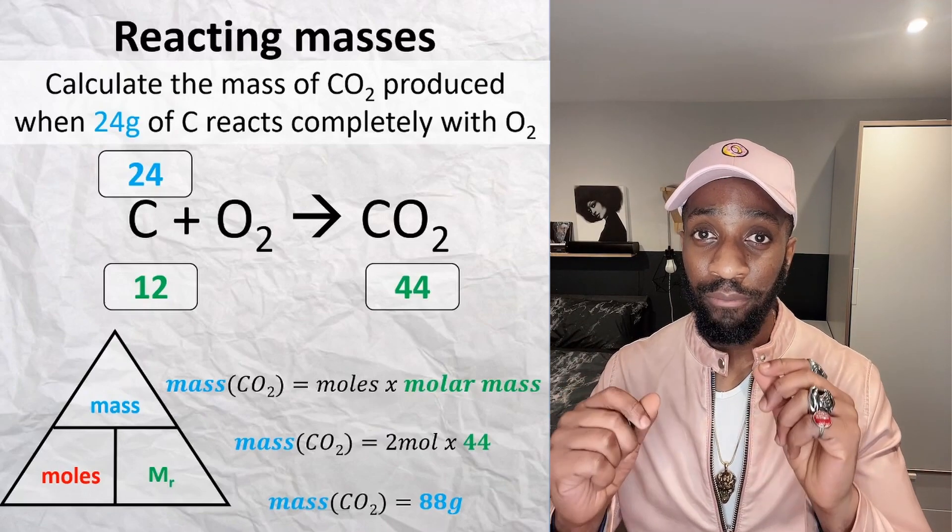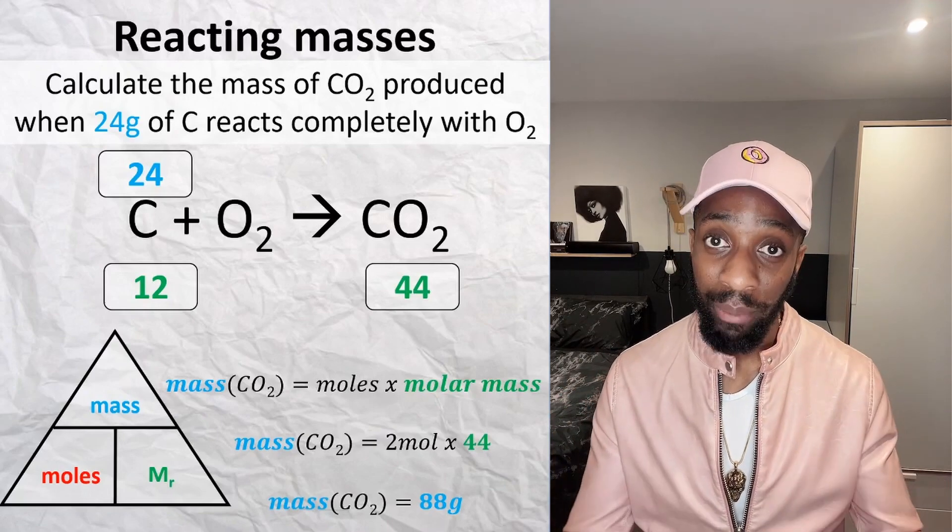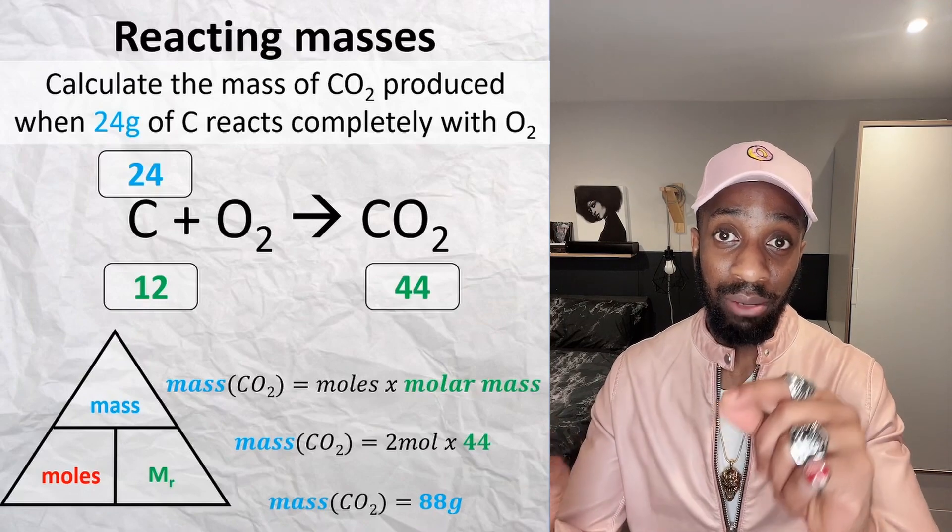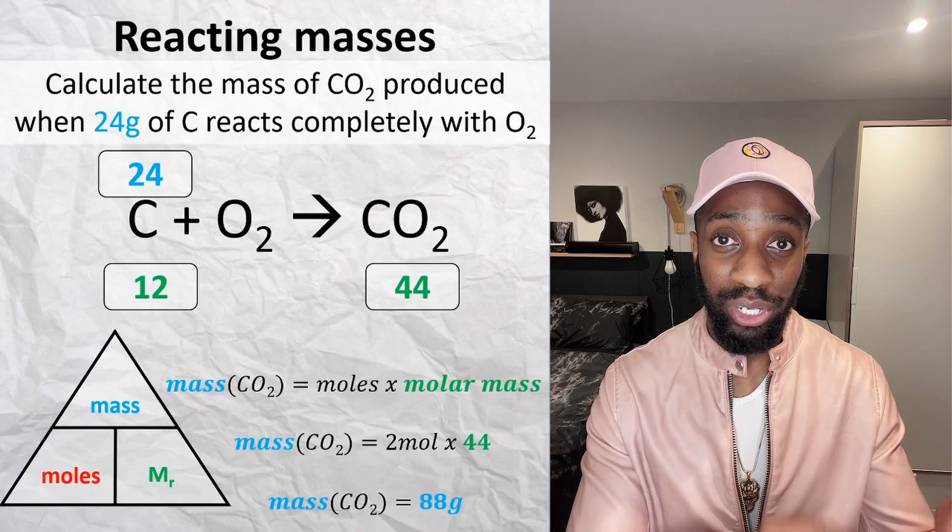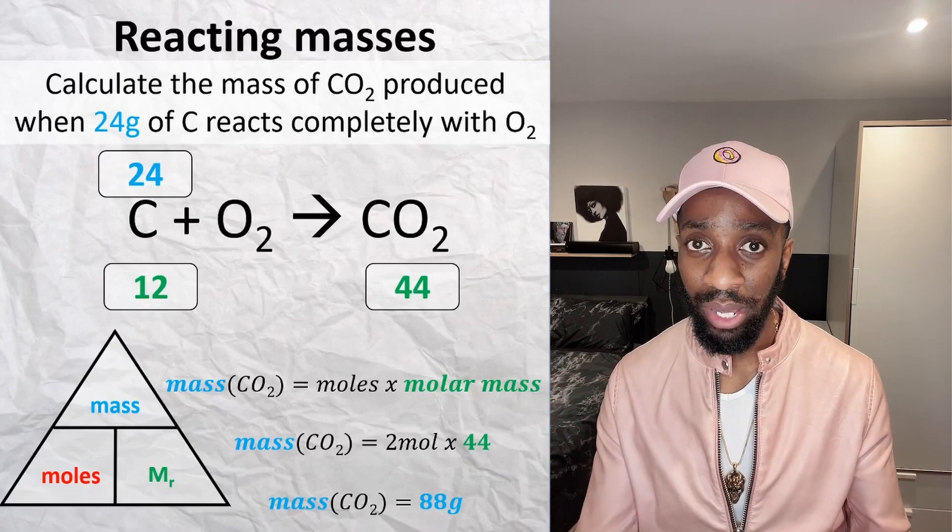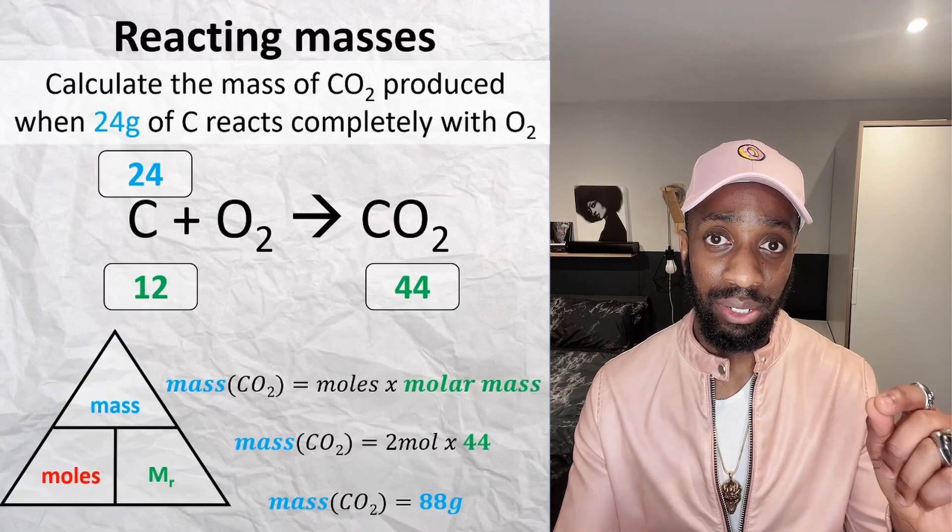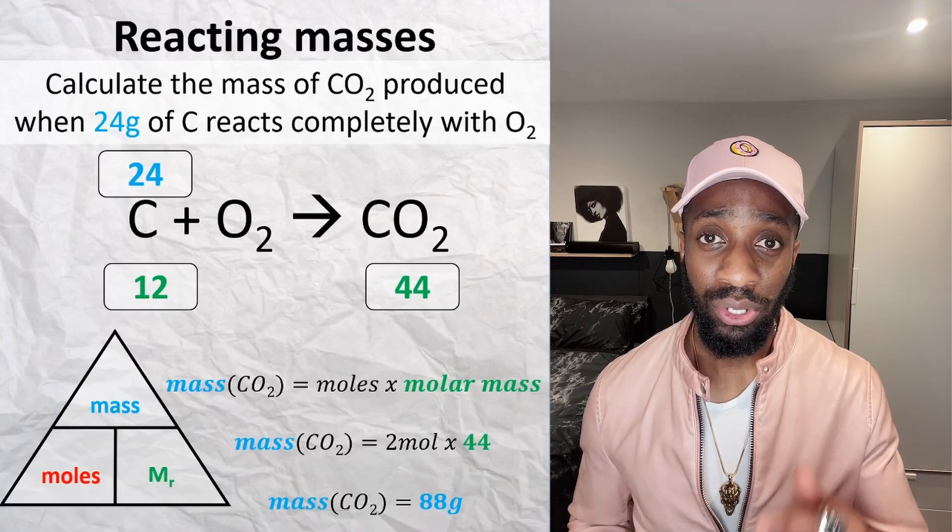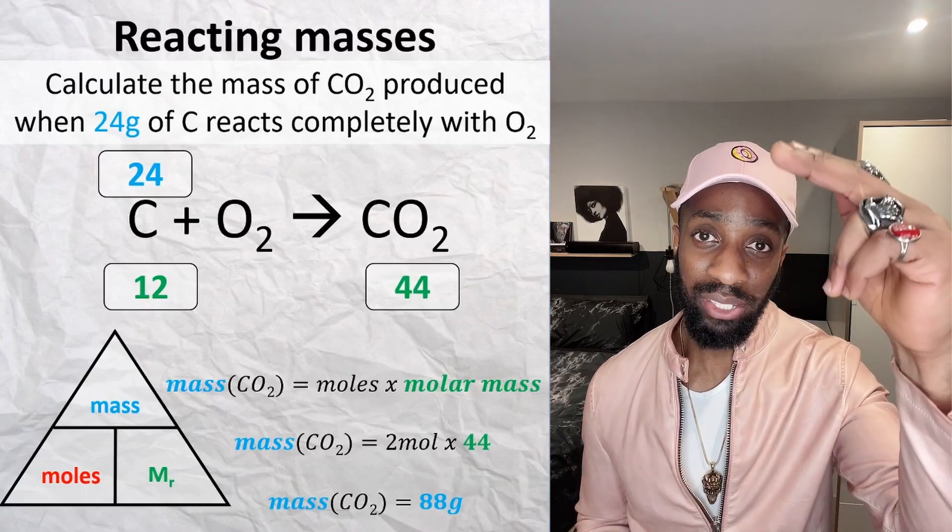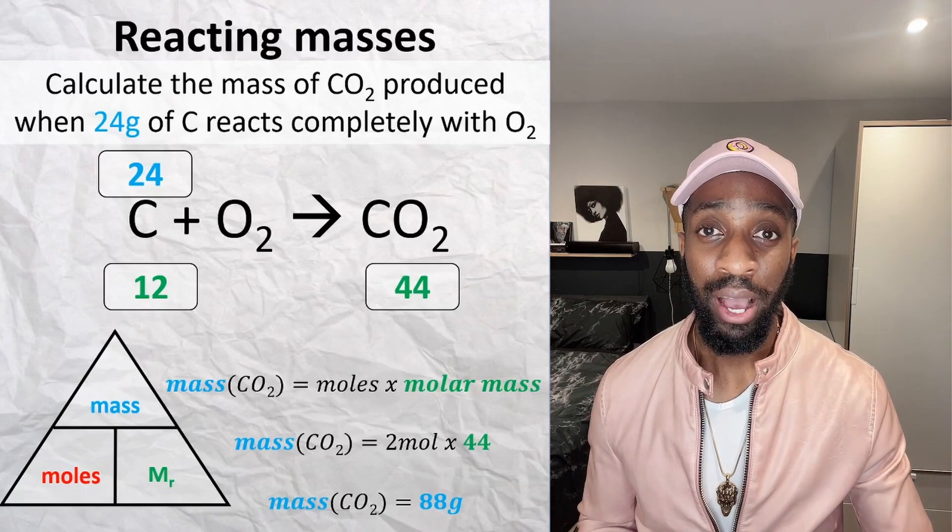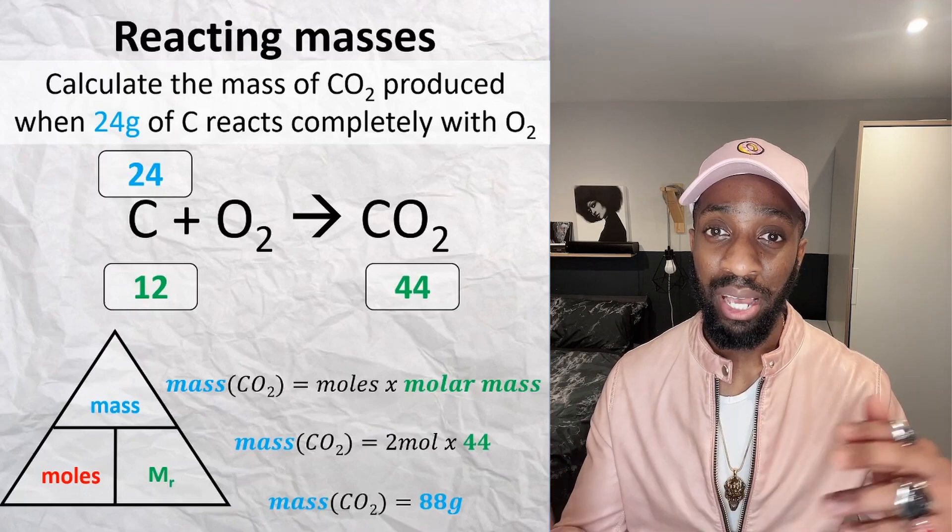And write the relative formula masses, relative atomic masses, or molar masses—whatever you want to call it—at the bottom of the balanced chemical equation. If you have to balance the chemical equation, obviously do that. But write them at the bottom and memorize this equation triangle, so you know that your moles is your mass over your molar mass, and you know that the mass is the moles times the Mr.